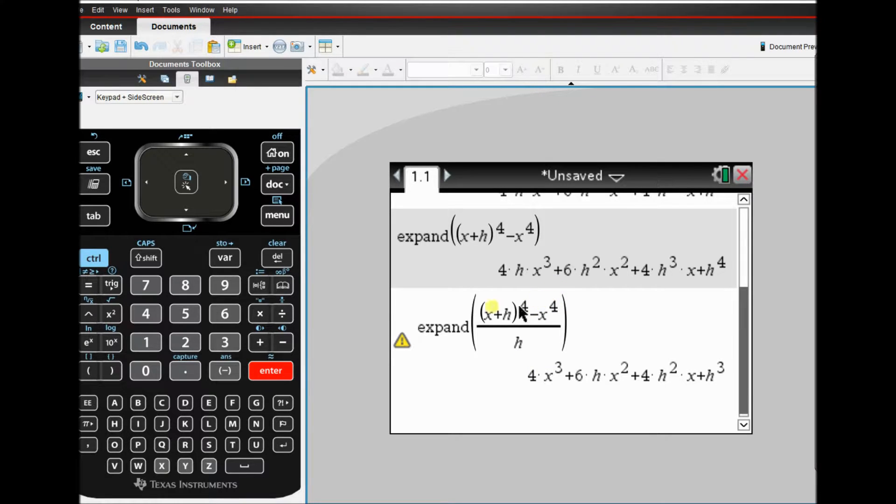So that would be basically the expression you'd be taking the limit of if you were finding the derivative of x to the power of 4. Now notice it puts up this little warning symbol. What that is just kind of saying is you've divided out something, you've essentially placed a restriction. The h can't be 0 and that's not necessarily clear just from here. So that's all that that symbol there means.